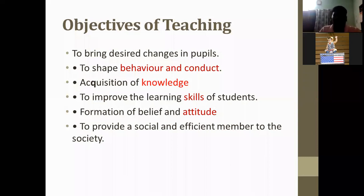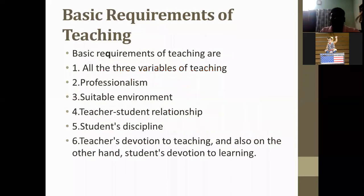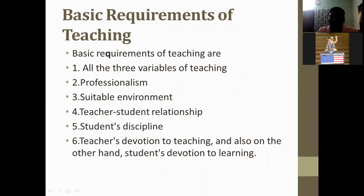The objectives of teaching include skill and attitude. Moving to the next slide, the basic requirements of teaching involve three variables: the teacher as the independent variable, the student, and the intervening variable, which relates to professionalism in teaching.